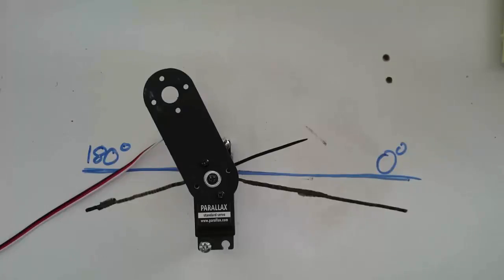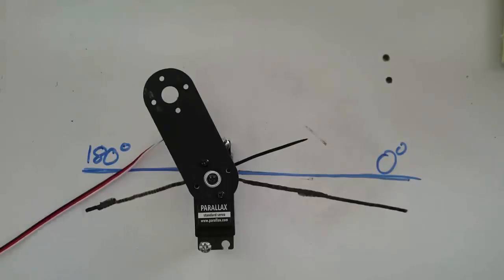The ability to set the angles of our servos is a very useful skill that we'll be using throughout the rest of the process of building our robot.